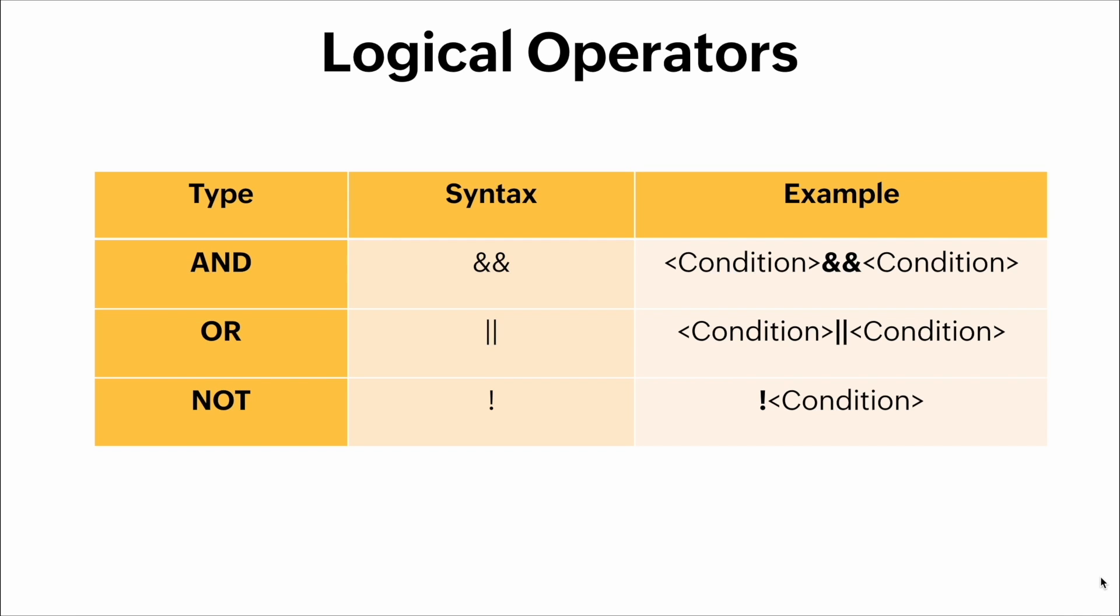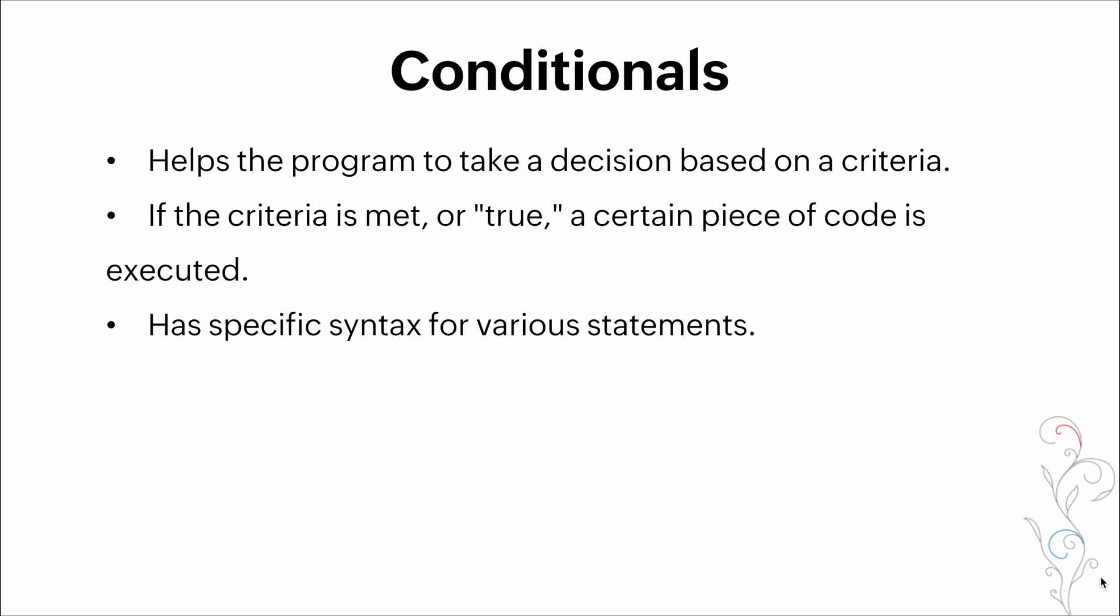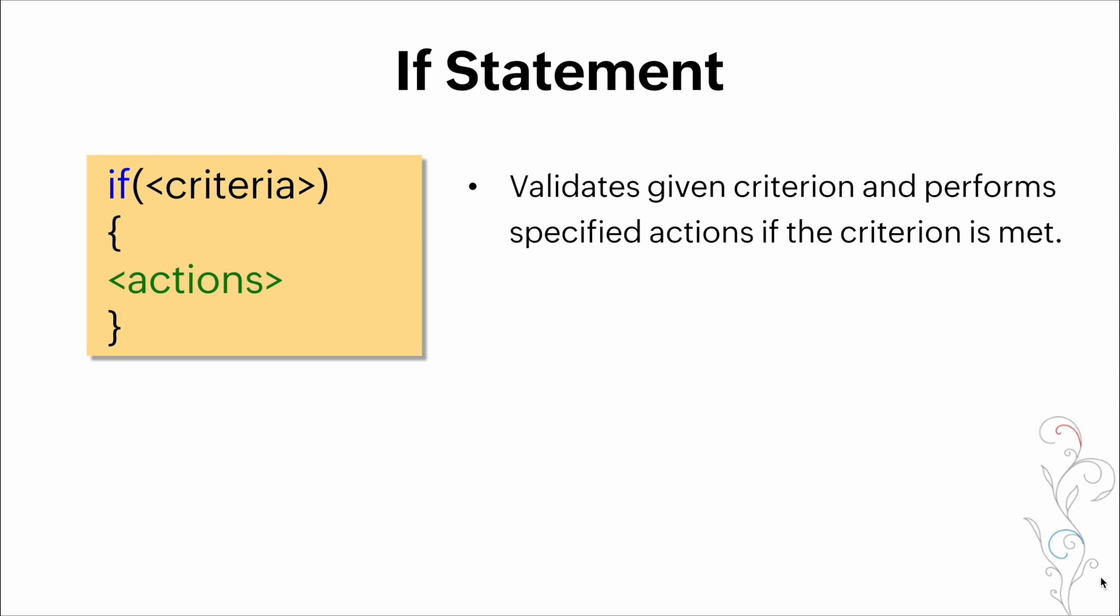Now here we have a table with logical operators: we have the AND, OR, and NOT operators. And here we have the operator truth table with the operators of AND, OR, and NOT. Now let's talk about conditionals. These help the program to take a decision based on a specific criteria. If the criteria is met or true, a certain piece of code is executed. Conditionals have specific syntax for various statements.